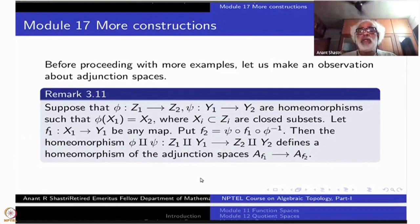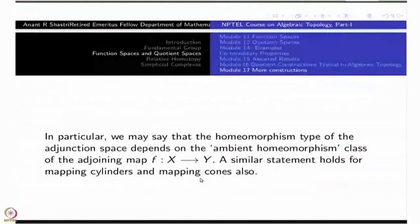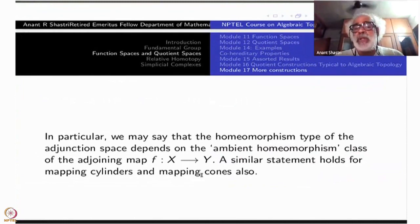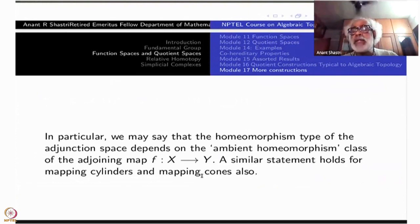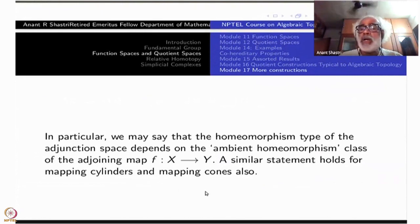Later on we will see a similar version for homotopy invariance of adjunction spaces, which will require less hypothesis than for homeomorphism. In particular, the homeomorphism type of the adjunction spaces depends on the ambient homeomorphism class. The homeomorphism should take place on the domain at the top level — the adjunction — and a corresponding homeomorphism Y1 to Y2, so that the two maps correspond under those homeomorphisms. That is the ambient homeomorphism class.